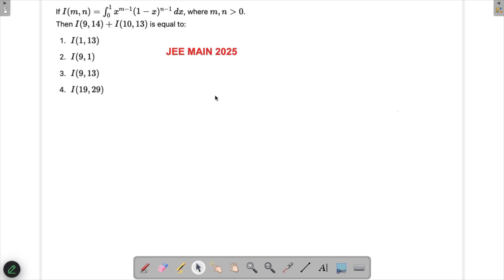Let's solve a problem which appeared in JEE Main 2025. In this question, there is an integration given, a definite integral of this form, and we're asked to find out what will be I(9,14) and I(10,13), and we have to choose one of these options.